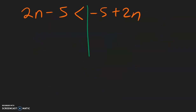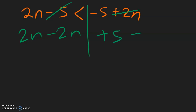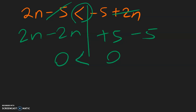For this example, the 2n stays over here. Bring this 2n — positive 2n becomes negative 2n. And for the constants, this negative 5 needs to move, becomes positive 5. Then bring down this negative 5. 2n minus 2n is 0. 5 minus 5 is 0. Copy down the symbol. It says 0 is less than 0, which is not true. If it said 0 is less than or equal to 0, then that would be true because 0 is equal to 0. But here, 0 less than 0 is not true, so we say no solution.